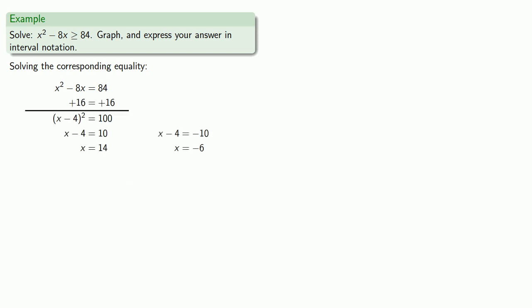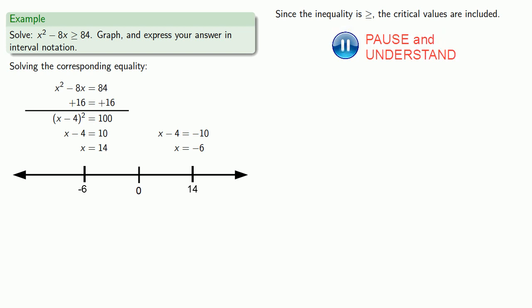Let's put down a number line and graph the critical values. x equals 14 is someplace to the right of zero. x equals negative 6 is someplace to the left. Since the inequality is greater than or equal to, the critical values, which solve the equation, will be included. We should mark them with closed circles.